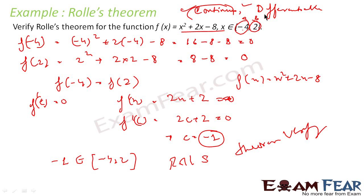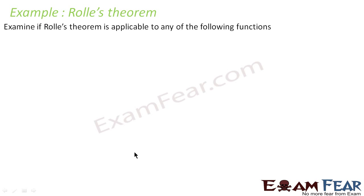To summarize the approach: first check if the function is continuous and differentiable; if yes, find f(a) and f(b) and verify they are equal. If all three conditions hold, apply Rolle's Theorem to find f'(x), set f'(c) = 0, solve for c, and confirm that c lies within the given domain. Here c = −1 lies in [−4, 2], so Rolle's Theorem is verified.